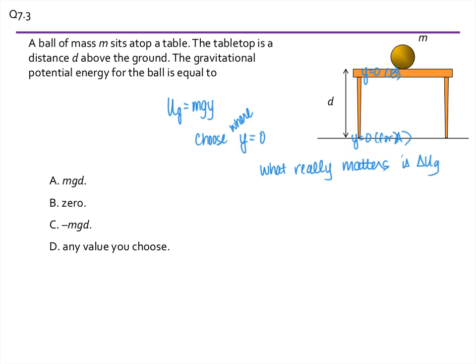The one that was kind of weird was the negative potential energy. And if we put the potential energy or the y value of zero d units above the table, then the potential energy of the ball would be minus mgd. So the basic idea is the gravitational potential energy of this ball could be anything. It just depends on what you choose as your y equals zero.